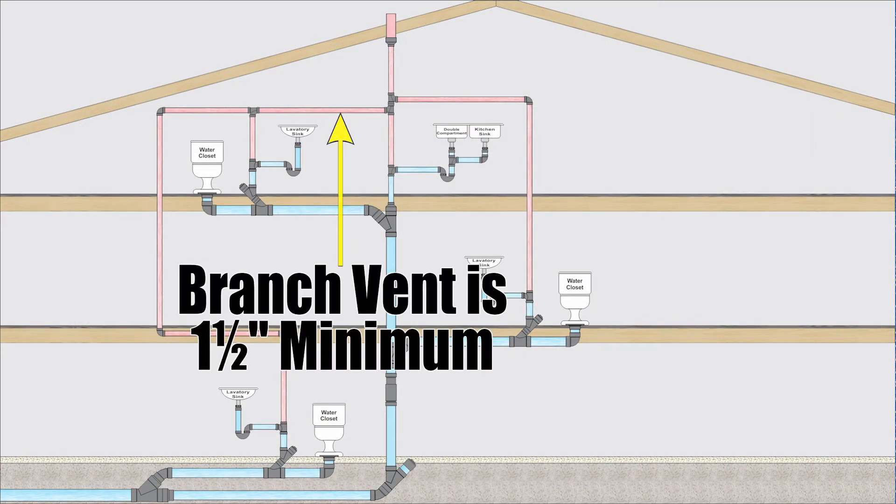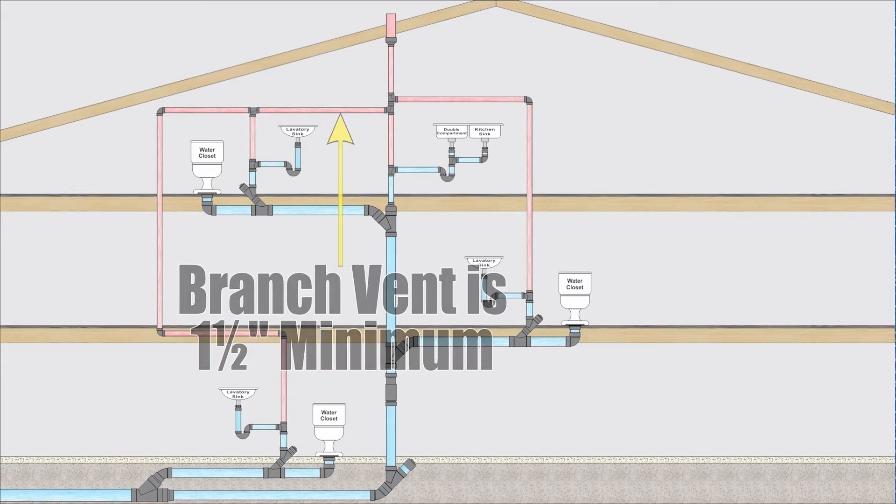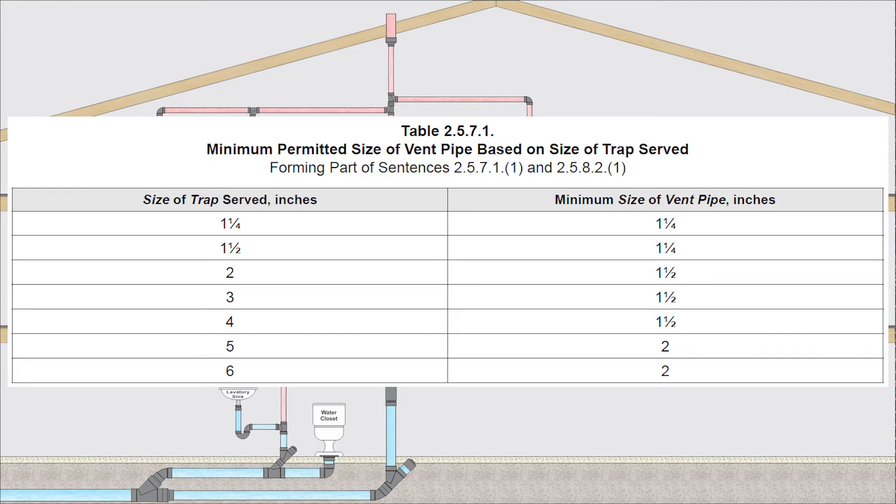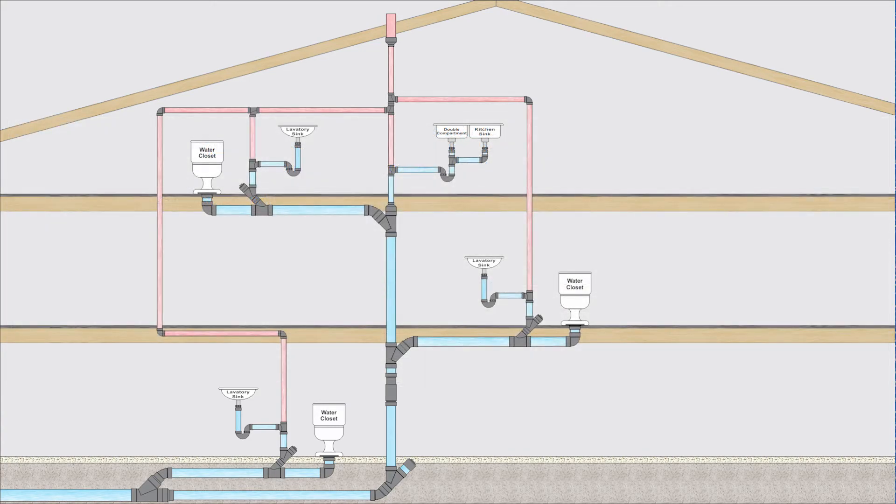Now there is one other table that I need to check because I need to check this for every single vent. That is table 2.5.7.1. That is the minimum size of vent based on size of trap served. Now the largest trap I'm serving is a water closet, which is three inches. Therefore, the minimum size of vent that I'm allowed to do is one and a half inches. Looks like we're good to go here then.